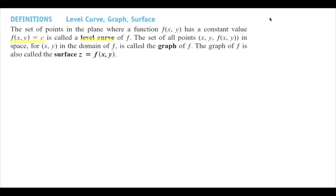To set up all points, note that you now have x, y, and z in the space. The set of points for x and y in the domain of f is called the graph of function f. The graph of f is also called a surface. We usually represent this by z equals f of x and y.